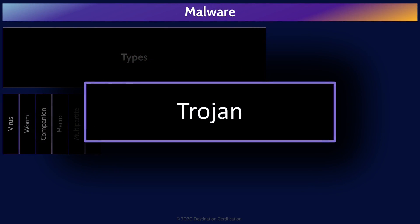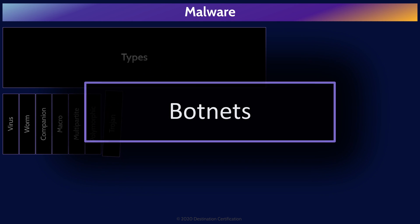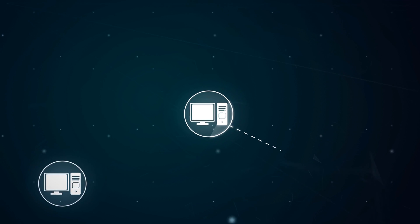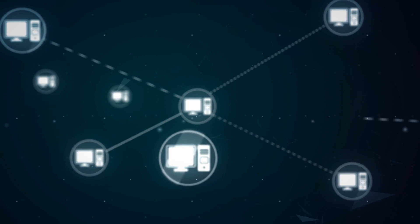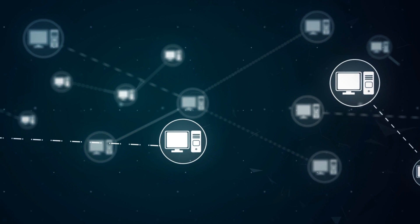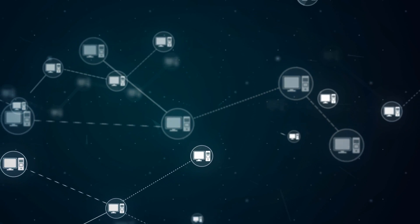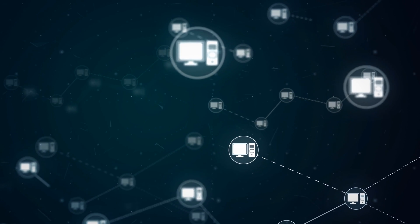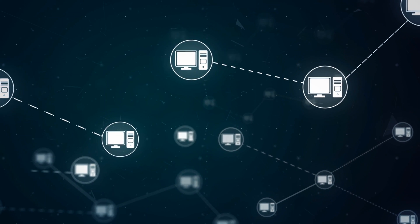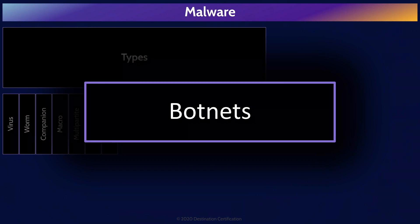Trojans mislead users of their true intent. They are disguised as legitimate software that the user would want, but they actually contain malicious code. A botnet is not a piece of malicious software, but rather multiple systems — multiple computers or devices that have been infected — allowing the systems to be remotely commanded and controlled. When harnessed together, botnets of hundreds, thousands, or even millions of systems can send vast amounts of spam, perform distributed denial-of-service attacks, or mine for cryptocurrency.